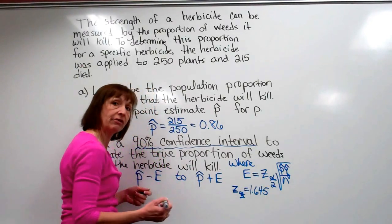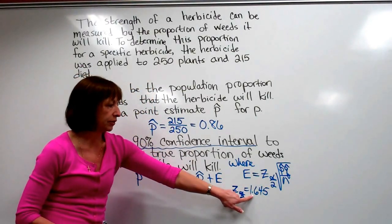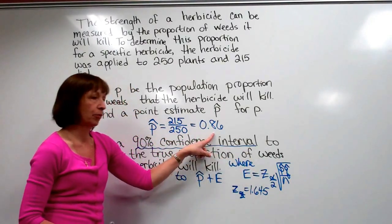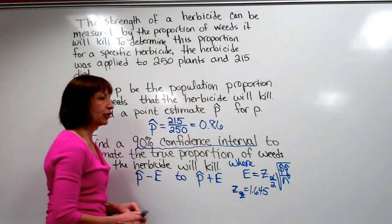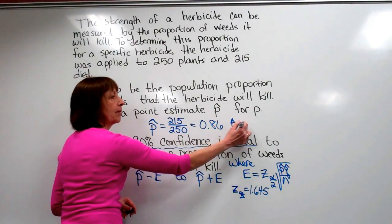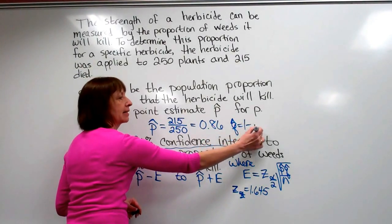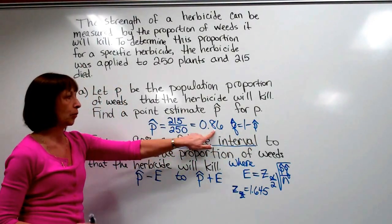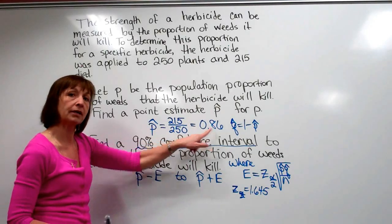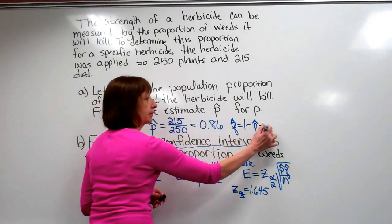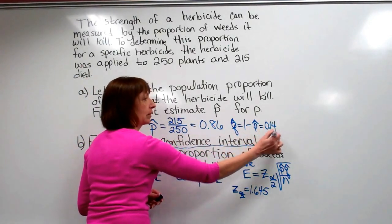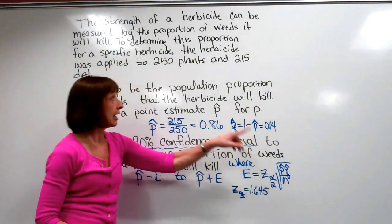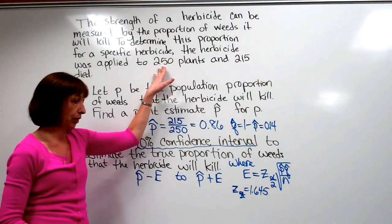From the earlier part, P-hat is 0.86. Q-hat is found by taking 1 minus P-hat, so 1 minus 0.86 gives us 0.14 for q-hat. And n, the number of trials, is 250.